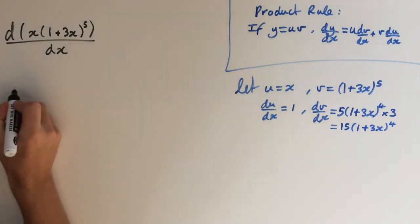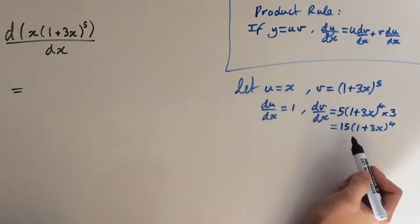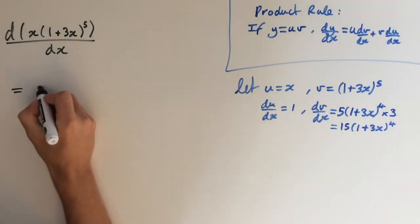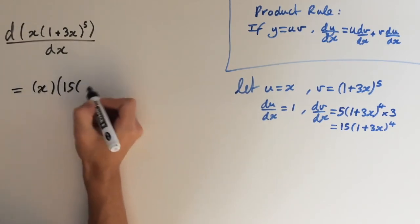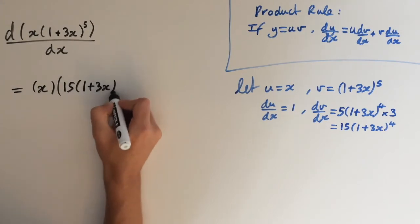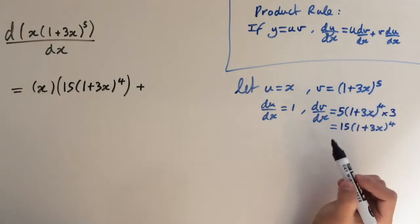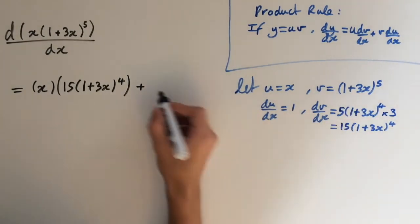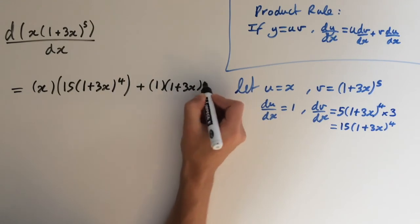So this right here is going to give us u times dv dx, x times dv dx, so x times 15 times 1 plus 3x to the power of 4, plus v times du dx, so 1 times 1 plus 3x to the power of 5.